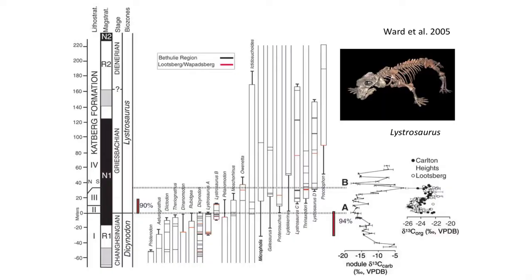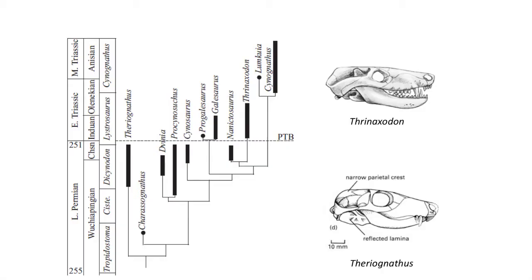So who survived among the vertebrates? A few dicynodonts, such as Lystrosaurus — in fact, Lystrosaurus is one of the few terrestrial tetrapods found in the early Triassic, a small squat burrowing animal. Another animal that survived was Thrinaxodon, our and all mammals' great ancestor. It may have been the burrowing lifestyle of both of these animals, or their independence from the water, that aided in their survival — they could live in the desert and hold out during the long dry seasons.